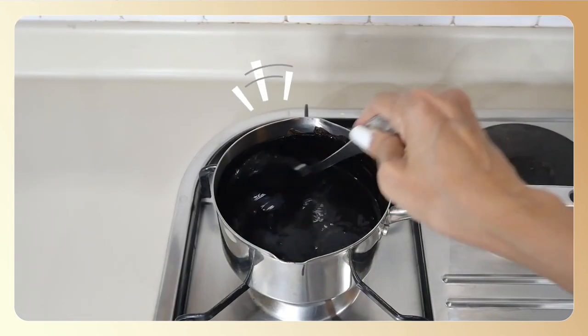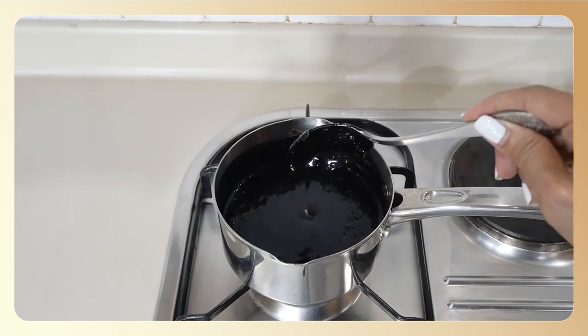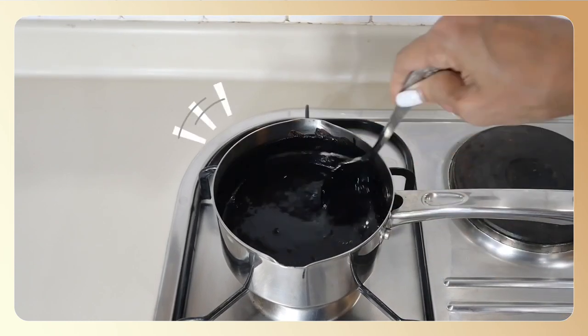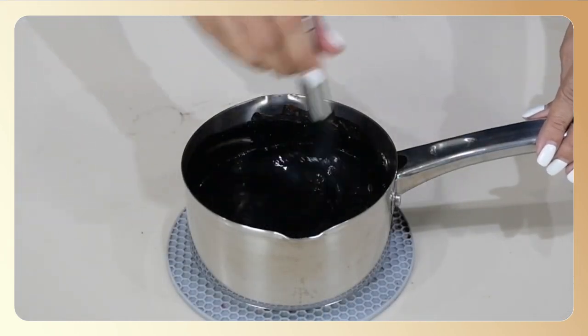Once you have mixed all the ingredients, bring it to a low simmer. Do not bring it to a boil—you just need to warm it to make sure that the chocolate powder is fully dissolved and you get a silky smooth, not lumpy, chocolate sauce. At this point I'm going to use a whisk.